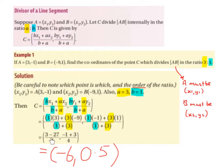So 3 minus 27 divided by 4 is -6. And -1 plus 3 divided by 4 is 1/2 or 0.5. So the coordinates of the point C, which divides AB in the ratio of 3 to 1, is (-6, 0.5).